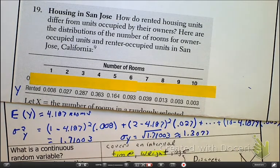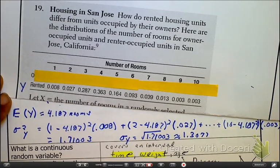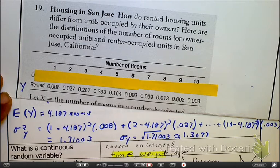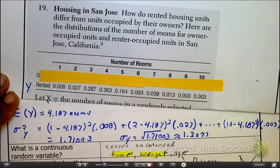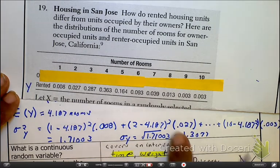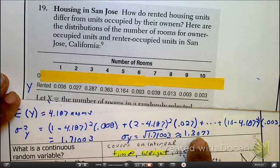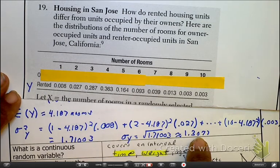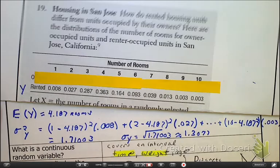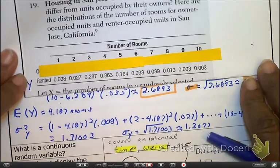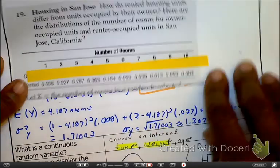So interpreting this one, this is saying if we have a random amount of renters, that it's going to typically be off by about 1.3 rooms away from the mean, which is approximately 4.187. So we're done. Have fun. Enjoy your day off. See you guys on Thursday. Do this Thursday!